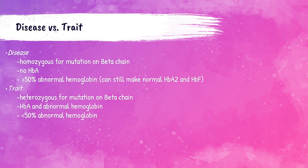When discussing hemoglobinopathies, it's important to understand the difference between disease and trait. Sickle cell disease is a homozygous mutation on the beta chain, resulting in no hemoglobin A being produced — it's all hemoglobin S. Hemoglobin A2 and hemoglobin F can still be made, but no hemoglobin A or A1. So 50% or greater of all hemoglobin in a person with sickle cell disease will be abnormal. Sickle cell trait is a heterozygous inheritance for the beta chain mutation — these patients produce some hemoglobin A and some abnormal hemoglobin, resulting in less than 50% of the hemoglobin being abnormal.